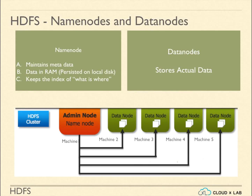An HDFS cluster has two types of nodes: one master node, also known as name node, and multiple data nodes. An HDFS cluster consists of many machines. One of these machines is designated as name node and the other machines act as data nodes.